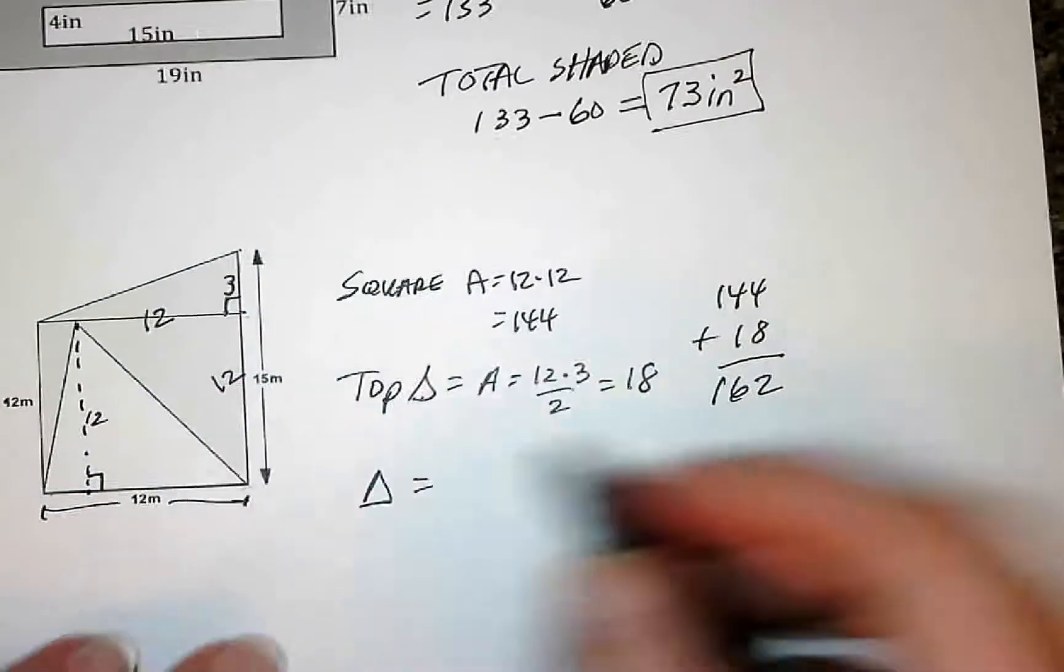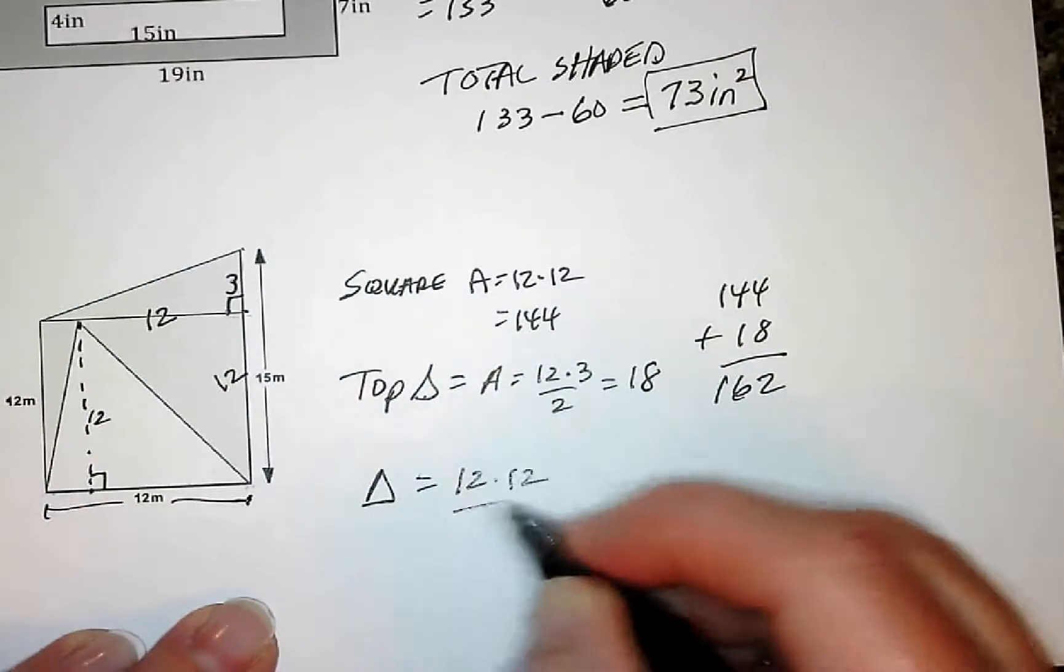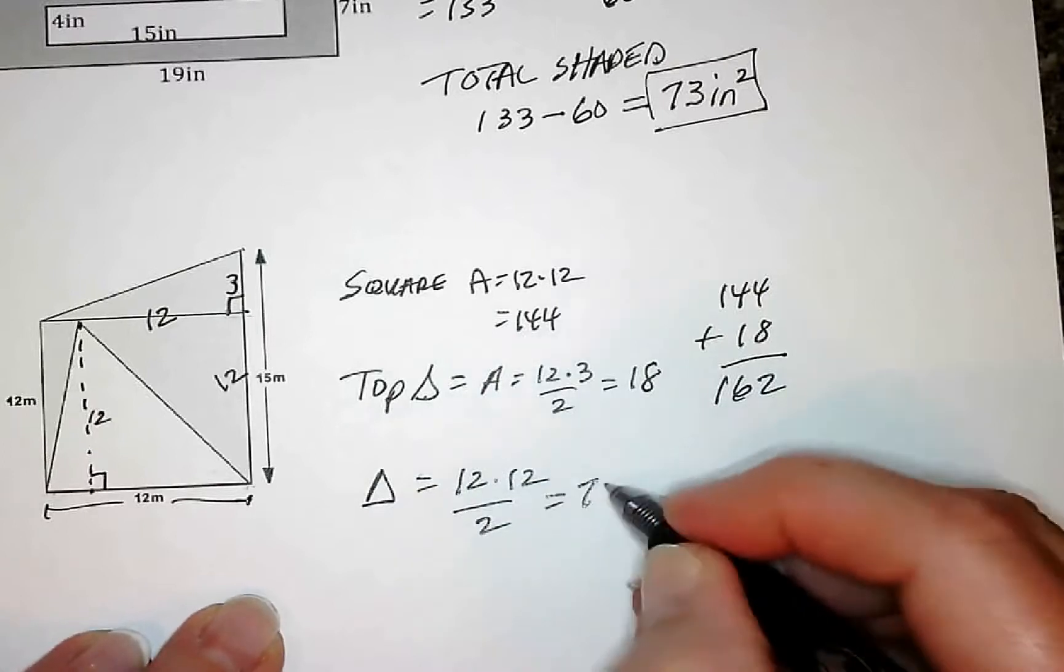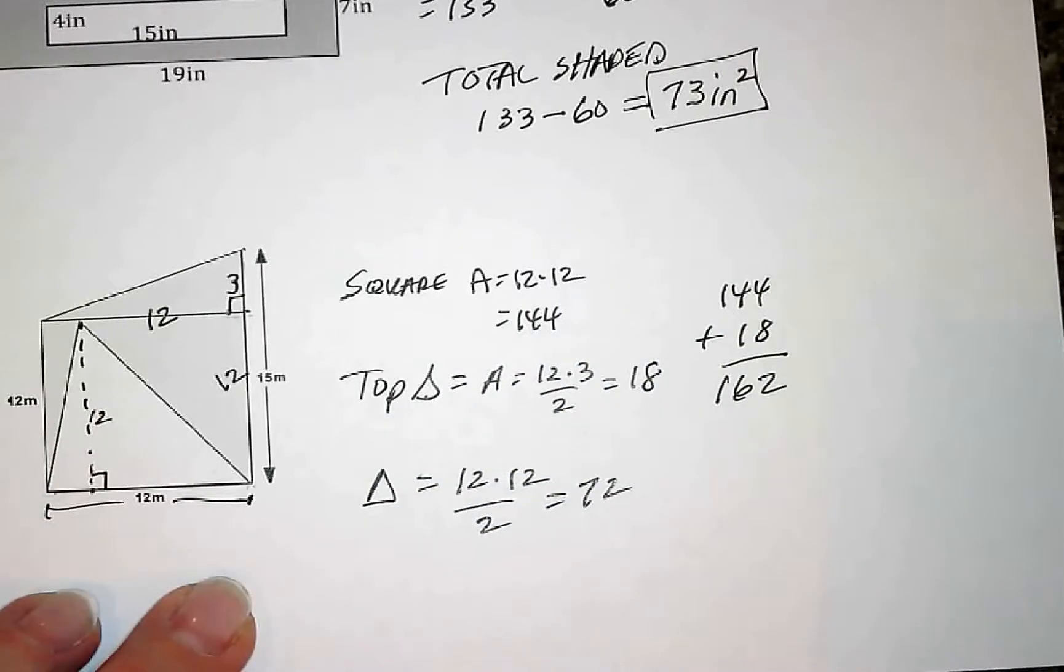and from this bottom point up to here is also going to be 12. So the base and the height of this triangle are 12 and 12. Don't forget triangles have base times height divided by 2. So the area of this white triangle is 72.